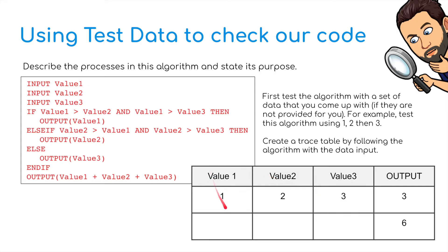We're going to input value 1, which from our test data here we've got 1, 2, and 3 as our test data. Input value 1, value 2, and value 3, as you can see here. If value 1 is greater than value 2 and value 1 is greater than value 3, then output value 1.